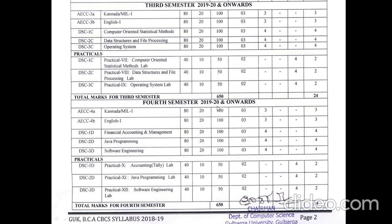In the fourth semester, you will again have a language — Kannada or Hindi — and English. The three computer-related papers are: DSC1D — Financial Accounting and Management (100 marks, 80 external, 20 internal), DSC2D — Java Programming (100 marks, 80 external, 20 internal), and DSC3D — Software Engineering (100 marks, 80 external, 20 internal).